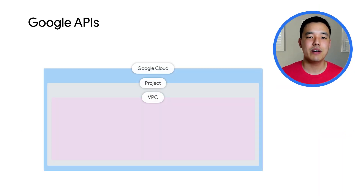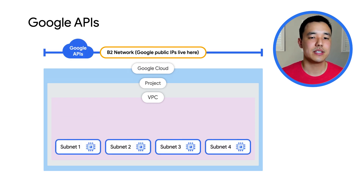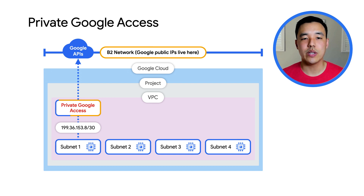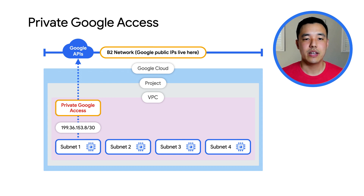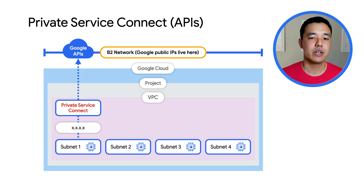Our last feature is Private Service Connect for Google APIs. Prior to this launch, there were two ways of connecting to Google APIs. The first is over the public internet, which requires your client to have a public IP or go through NAT to hit a public API endpoint. The second was to configure Private Google Access, which removed the requirement to have a public IP or go through NAT — now your clients can privately route traffic to private endpoint IPs that Google defines. With the launch of PSC for Google APIs, you have the ability to create multiple custom endpoints of your choosing. Now you get more control over which APIs hit which endpoint, and it remains completely private to your VPC.